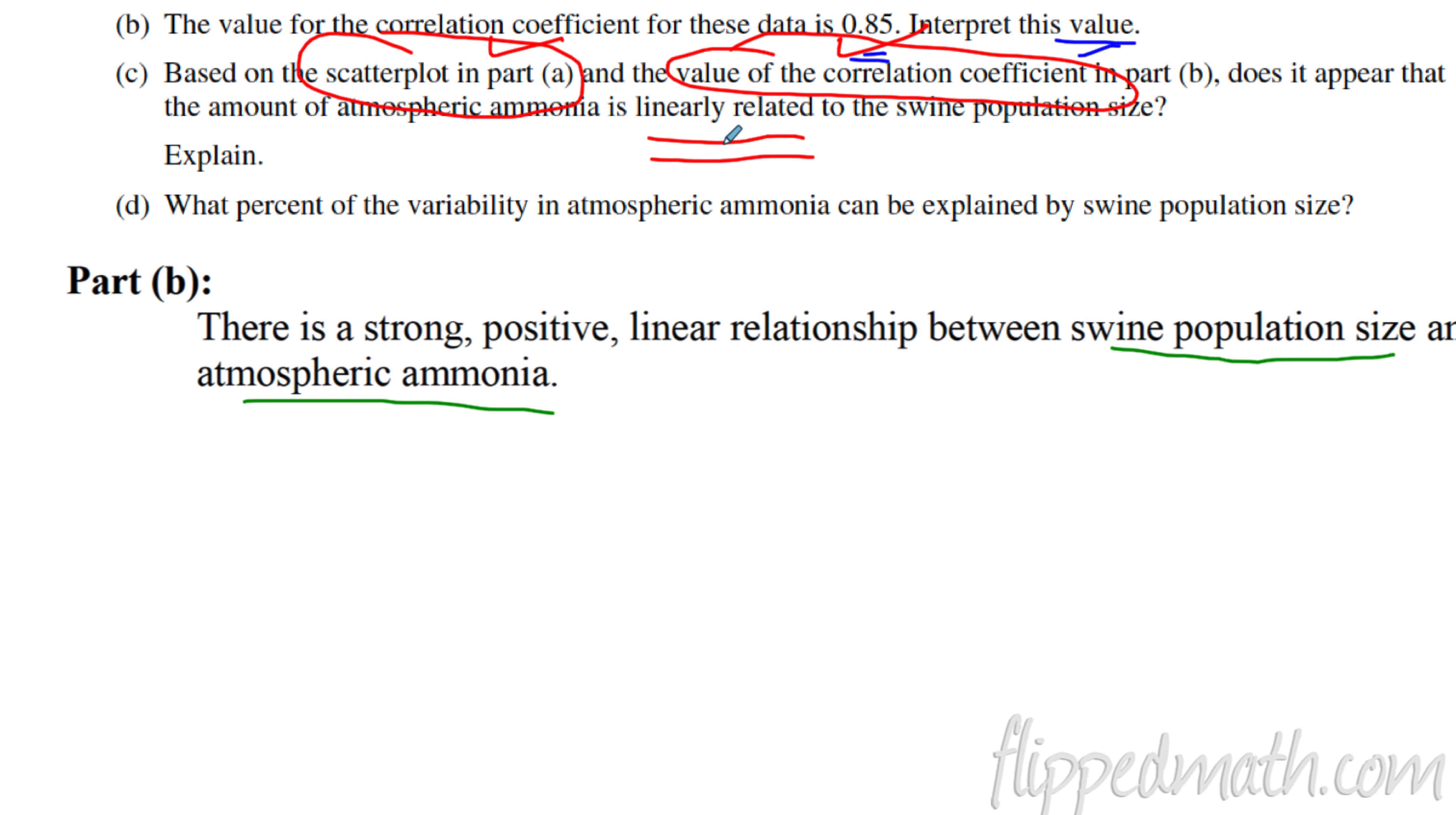Part C, based on the scatter plot. So here's where we get in trouble. Based on the scatter plot in Part A, so you have to comment on the scatter plot. And you have to comment on the value of the correlation coefficient. Does it appear that the amount of atmospheric ammonia is linearly related? So they're asking you to look at the scatter plot and look at that value and determine if this is a linear model or not. So when you write your solution to this, talk about this, talk about this. Because it says based off of those two things, if you don't talk about one of those, you don't give full credit. Here's what the solution guide says for that question. Both the value of the correlation coefficient and the pattern in the scatter plot indicate that there's a positive linear relationship between the size of swine population and atmospheric ammonia.